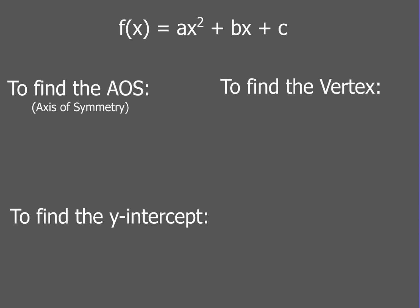The first thing you're gonna wanna do is find the AOS — that stands for the axis of symmetry. To find the axis of symmetry, you simply use the formula x equals negative b over 2a. Make sure you write x equals, because if you don't, that means no point for you for the AOS, because it is a line. The axis of symmetry is a line, and it divides a parabola in half, because a parabola is symmetrical.